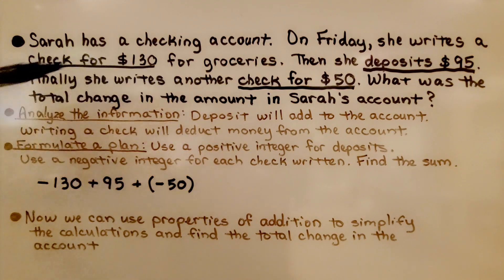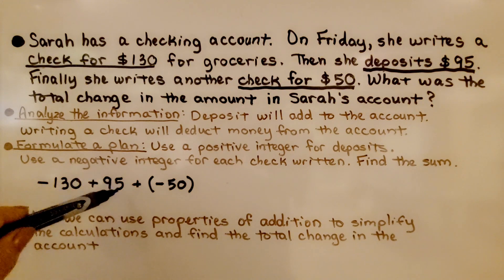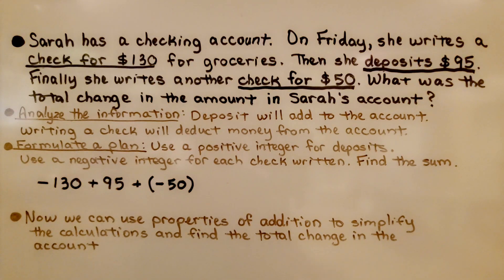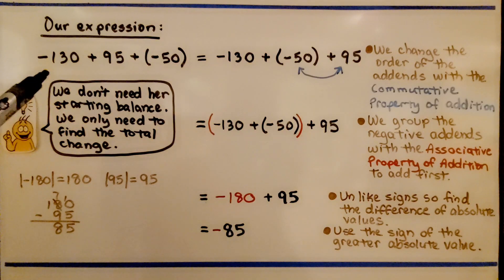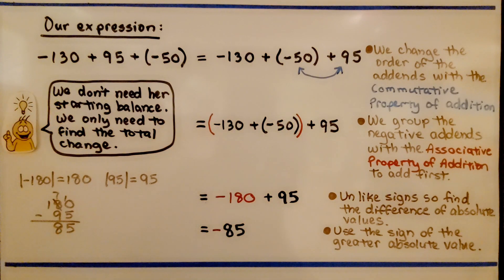Deposits will add to the account; writing a check will deduct money from the account. We formulate a plan: use a positive integer for deposits and a negative integer for each check written. We write this as a check plus a deposit plus a check. Our expression is negative 130 plus 95 plus negative 50.